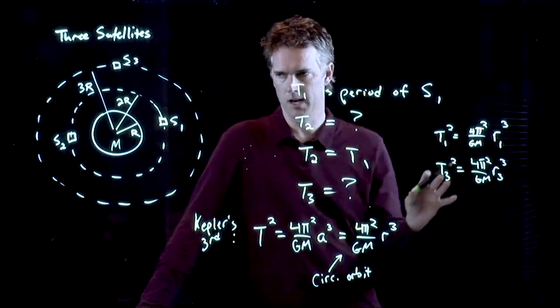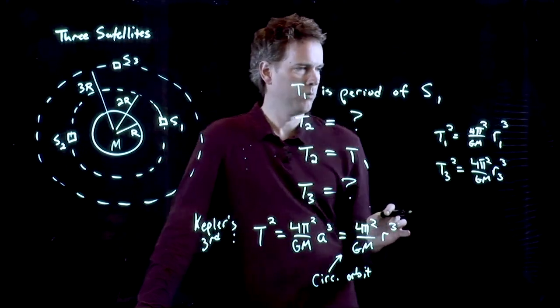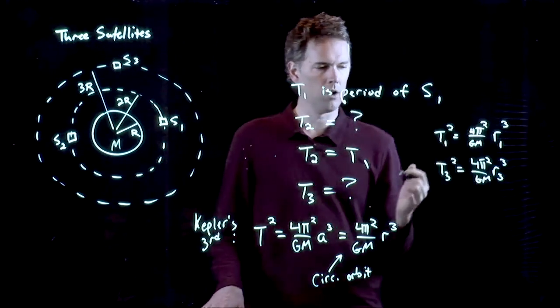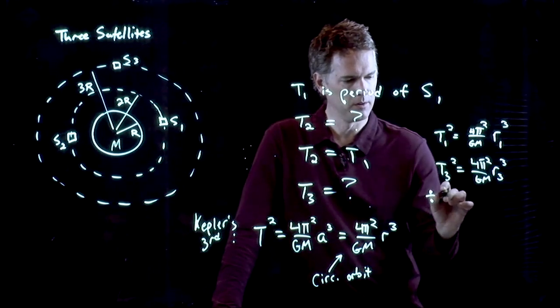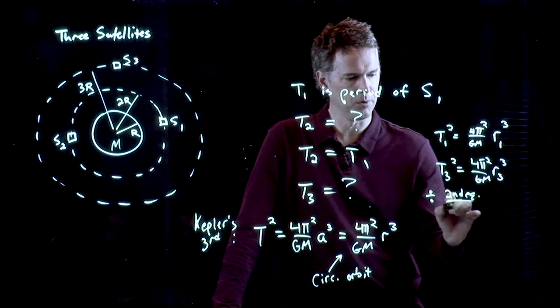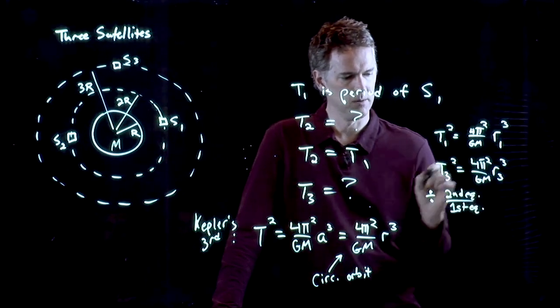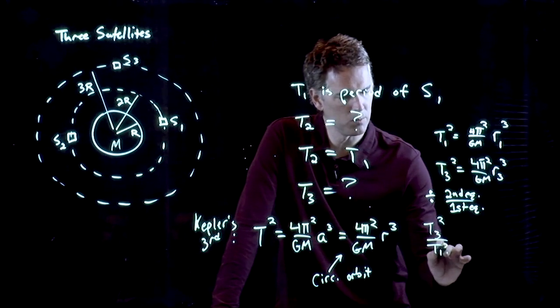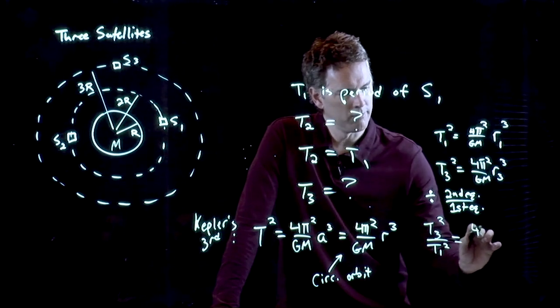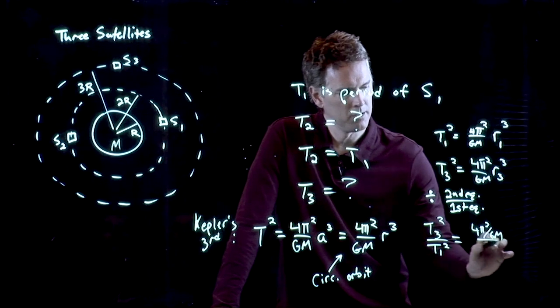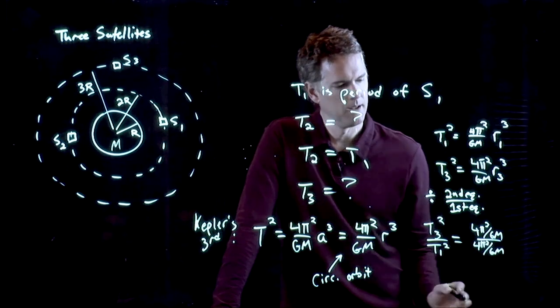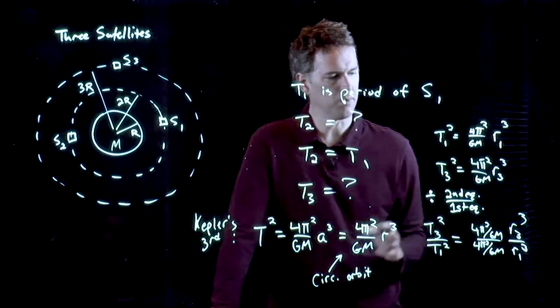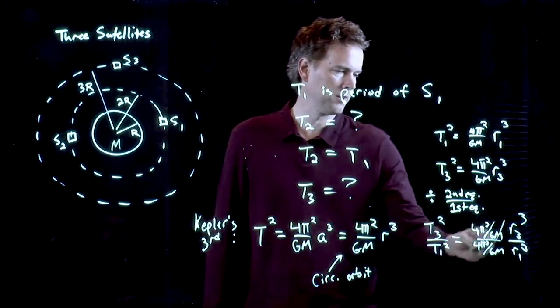T3². And now I can relate these together. How do I relate them together? Well, you can solve the first one for 4π²/GM and stick it into the second one. Or you can just divide the second equation by the first equation, which is kind of a nice little trick. So I get T3²/T1² equals 4π²/GM divided by 4π²/GM. I have an R3³ on top, I have an R1³ on the bottom. All that stuff in the front cancels out.